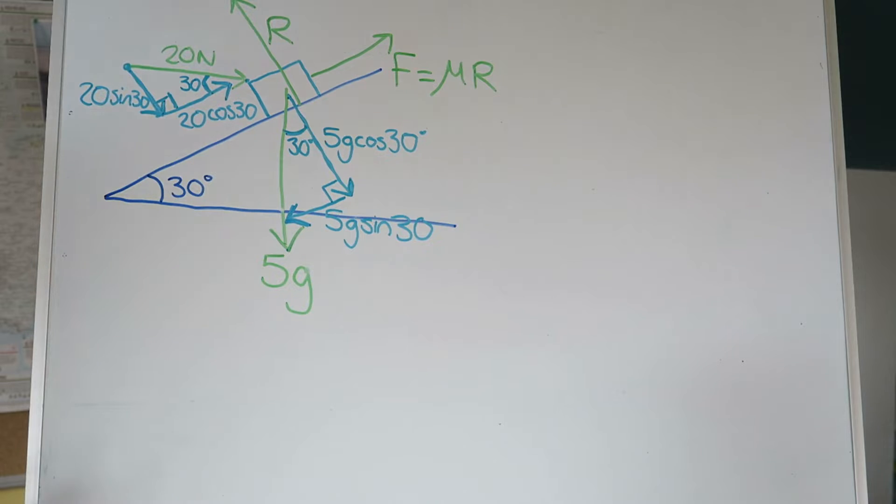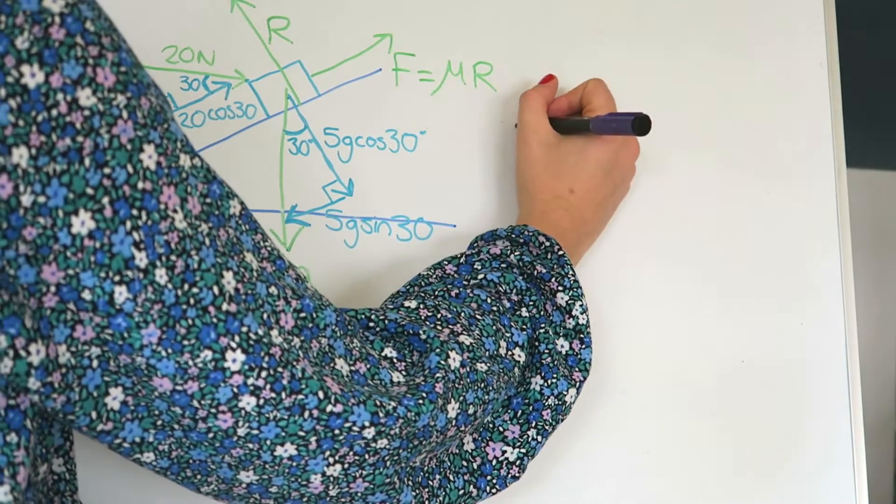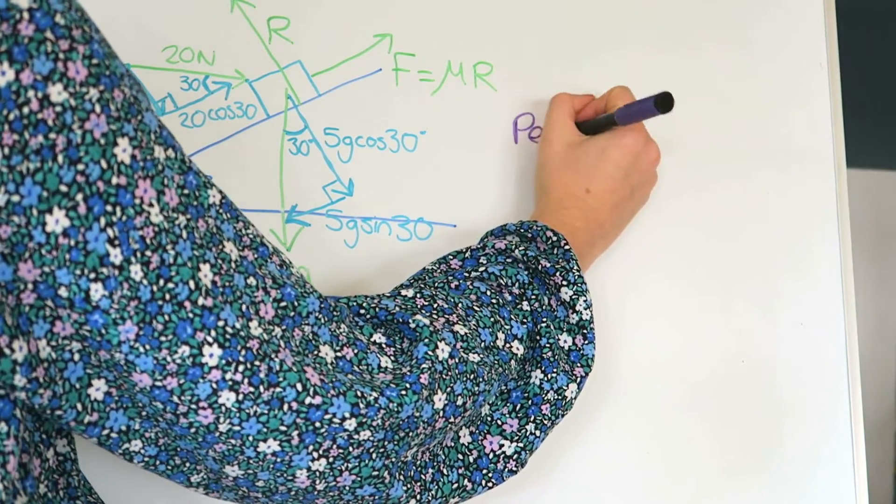Hopefully you can see that okay on the screen. It's quite busy, isn't it? But it's done, and that is the hardest bit of work of the question. If you've got the diagram sorted, the rest will follow, I promise. So let's pull out some equations. We're going to do that by looking at all the forces parallel and perpendicular to the slope.